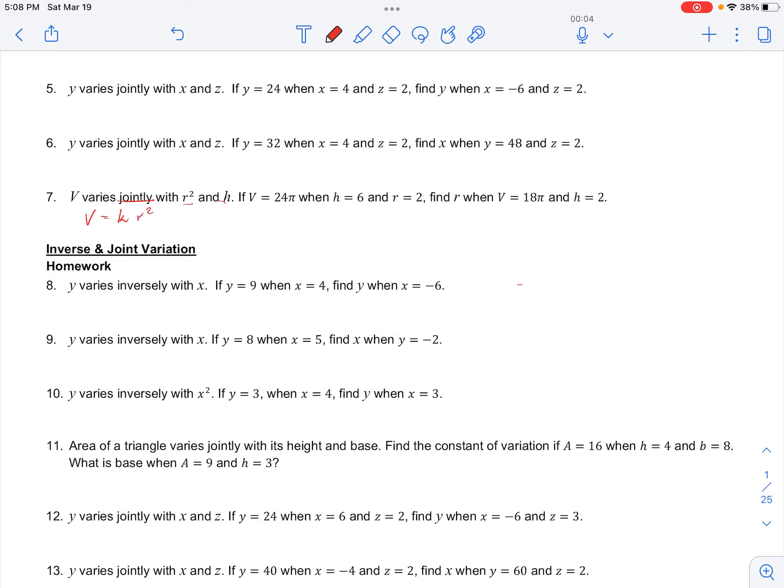And jointly, r squared and h are multiplied together on the other side. So we can find our k through this initial condition. So we have 24 pi as our volume is equal to k times r squared, which is 2 squared, times 6. So we're left with 24 pi is equal to k times 2 squared times 6 is 24.